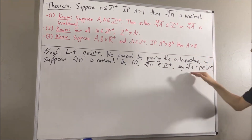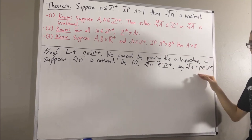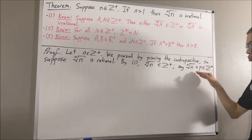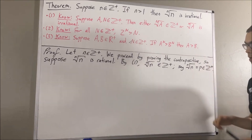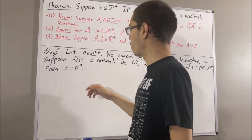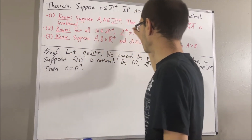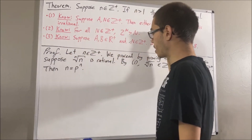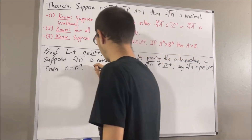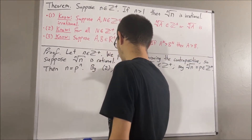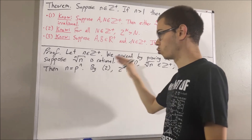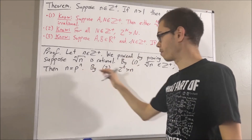Now, if we take this equation and raise both sides to the power of n, we get that n is equal to p to the power of n. By fact number two, we know that 2 to the power of n is greater than n. So, 2 to the power of n is greater than p to the power of n.